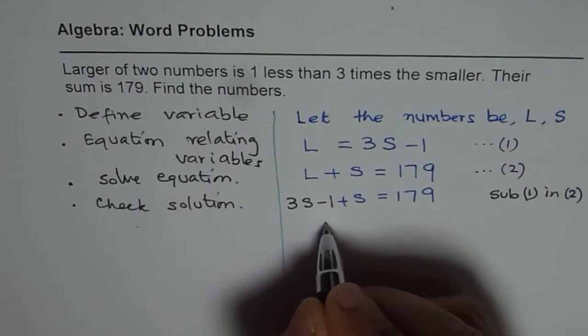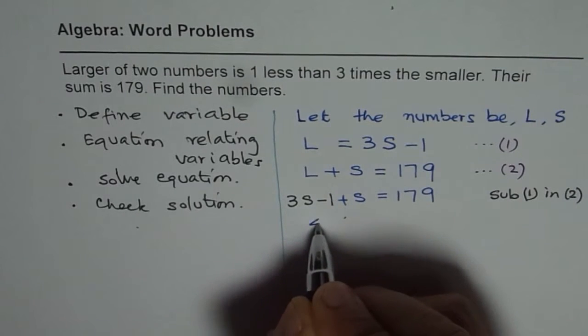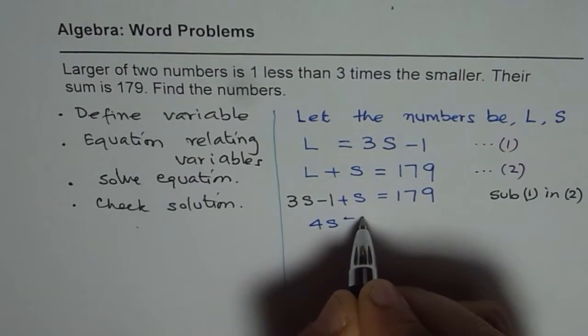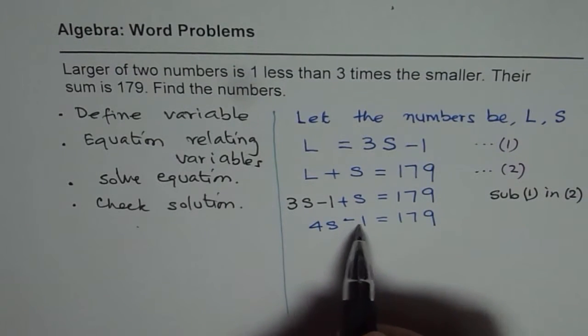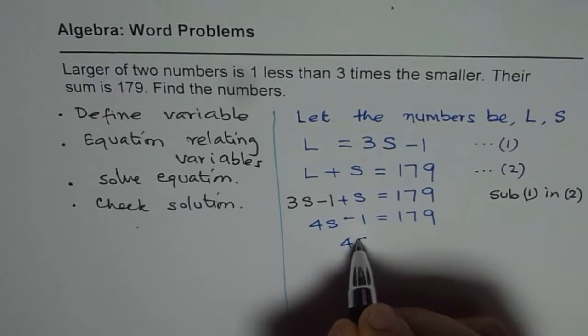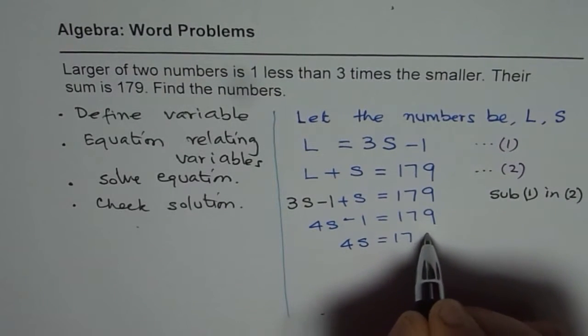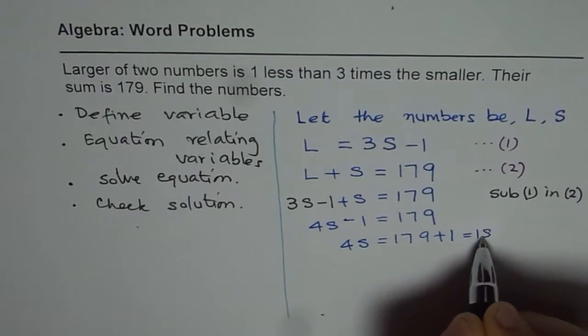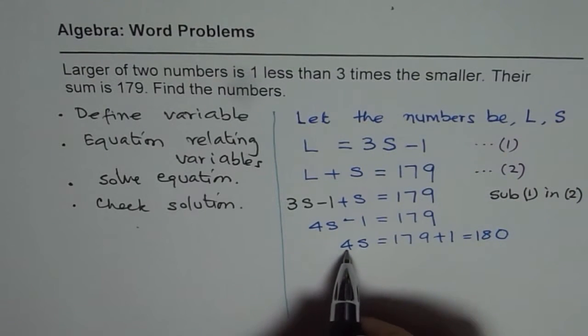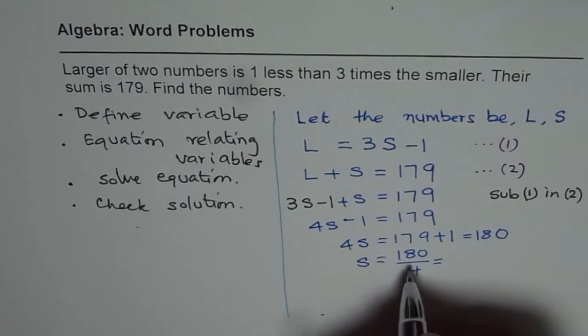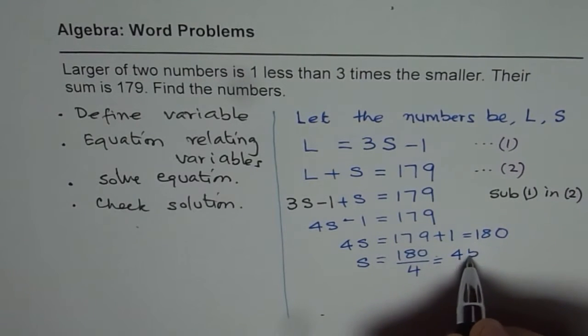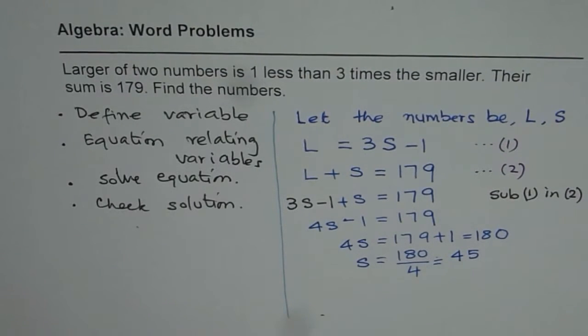Now let us solve for S. We get 3S plus S as 4S. We have 4S - 1 = 179. Now we can add one, so we get 4S = 179 + 1, which is 180. Now we can divide by 4, so we get S = 180 ÷ 4 = 45.